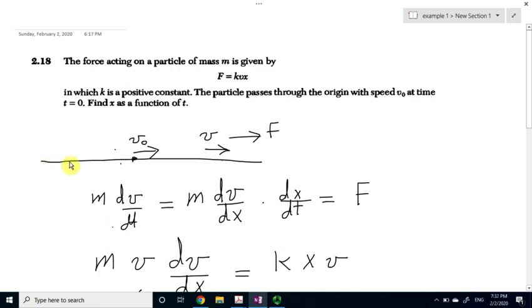So we have the x-axis and I chose the origin somewhere here. Now at time equals 0, the particle passes through the origin with velocity v0. Now I took v0 to be to the right, so v0 is positive according to my choice, while x at the beginning is 0.